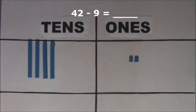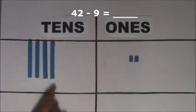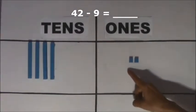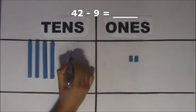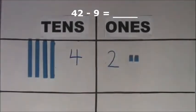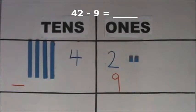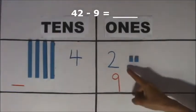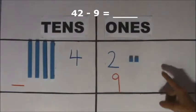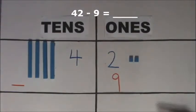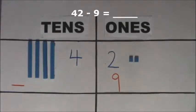There are 42 cubes. 42 is 4 tens and 2 ones. Let's take away 9 ones. Are there enough ones to take away 9 ones? There are only 2 ones. There are not enough ones to take away 9 ones.